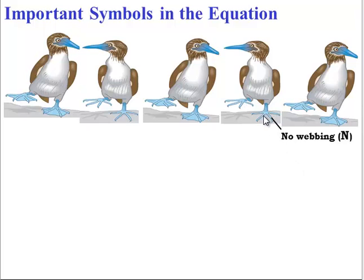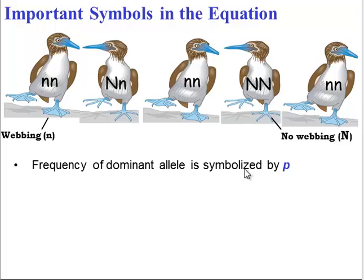In the boobie population, no webbing on the feet is dominant. Webbing is recessive. And let's say that we know the genotypes of these boobies. Well, the frequency of the dominant allele is symbolized by p. And in this case, it would be 0.3.